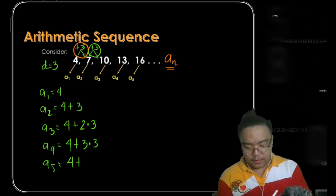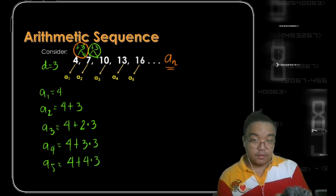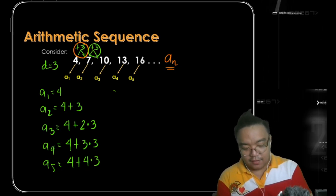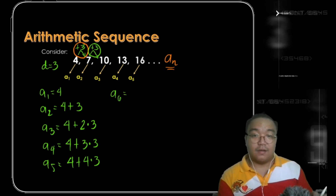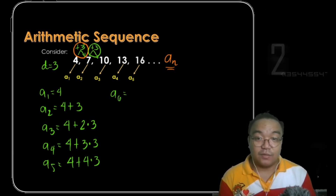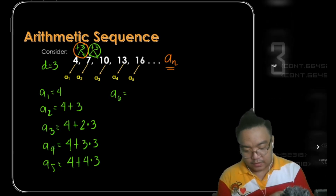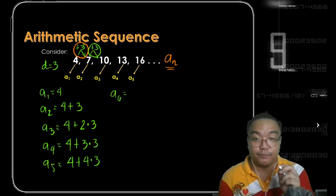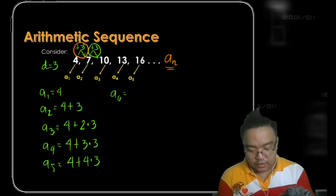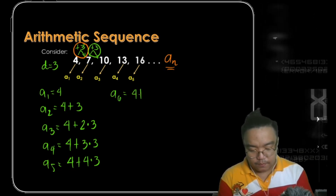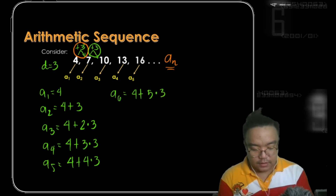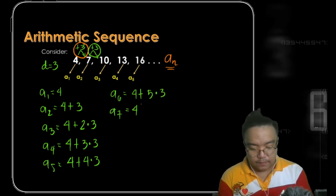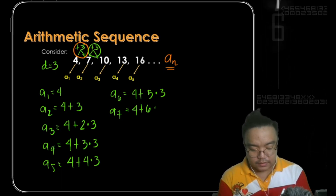We can continue this pattern indefinitely. A sub 6 is 4 plus 5 times 3, and the 7th term is 4 plus 6 times 3.